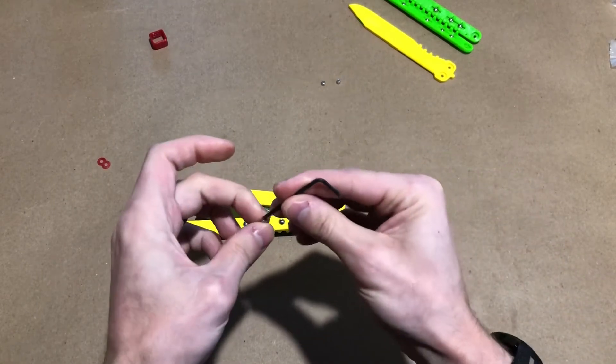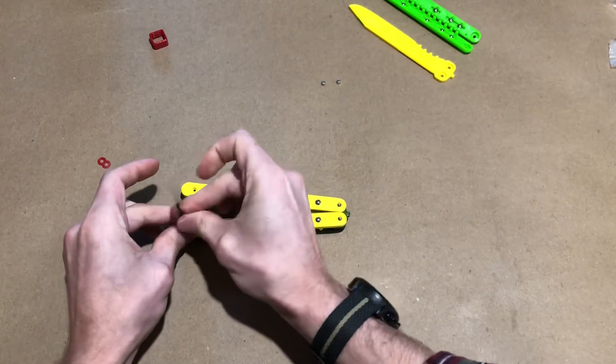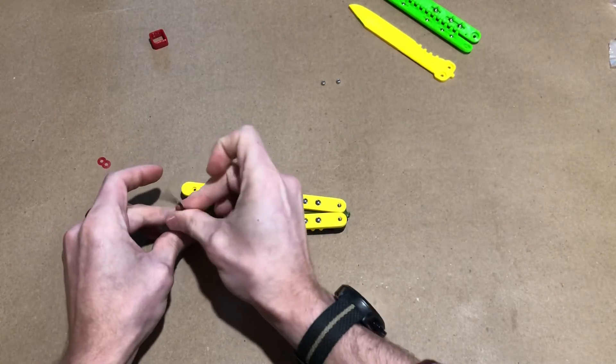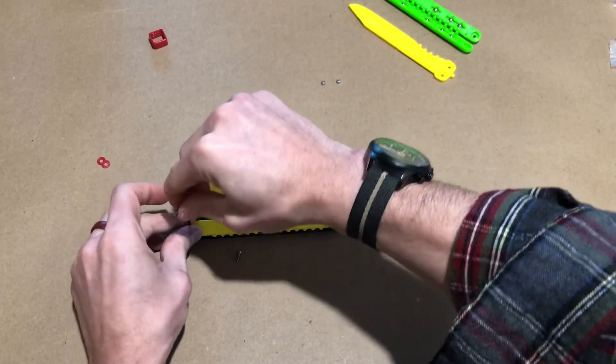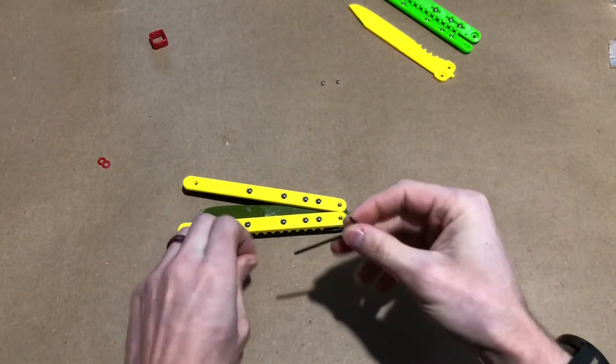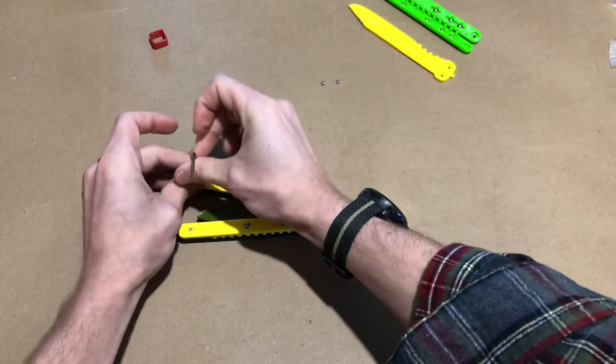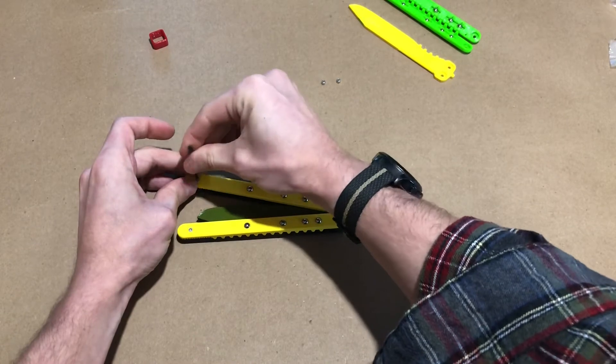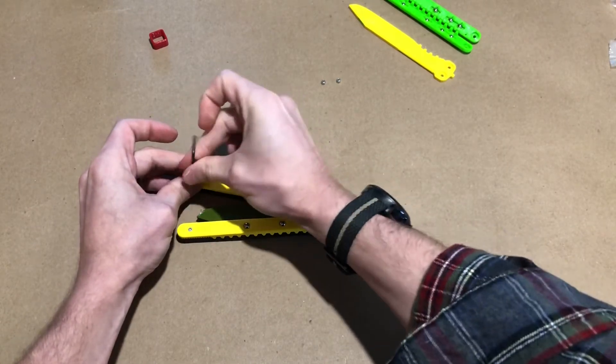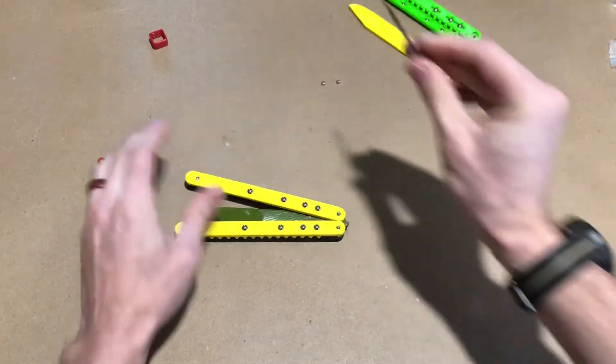Now I'm going to take each screw and I'm just going to screw each handle in. I'll just stop when I feel light resistance. This does not need to be super tight. If you over tighten it, you could damage the plastic. All right a little bit of resistance I'm going to stop.